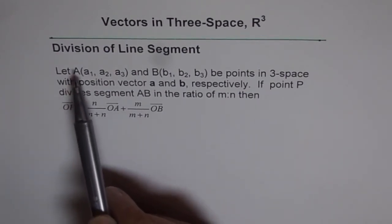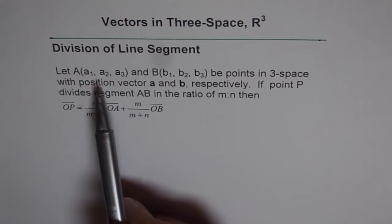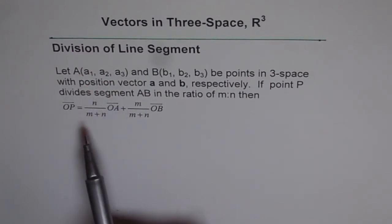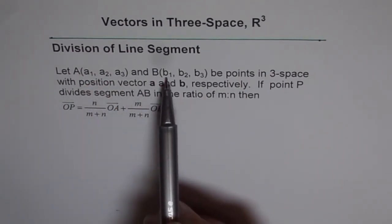So when we write A with A₁, A₂, A₃, these are the coordinate points in R³. Similarly for B, B₁, B₂, B₃, these are the coordinate points for B.